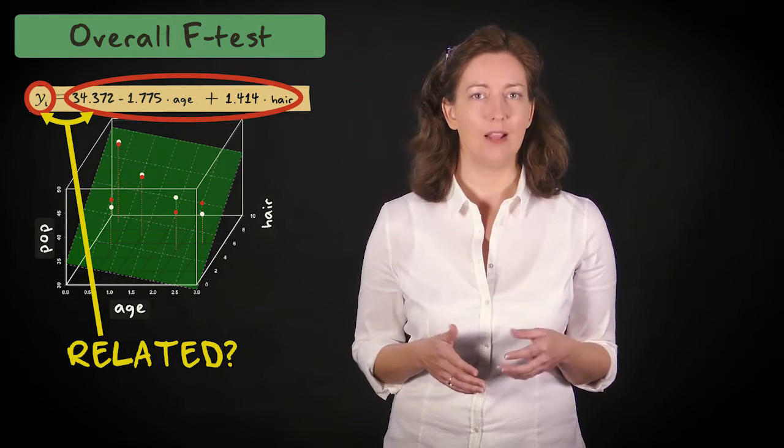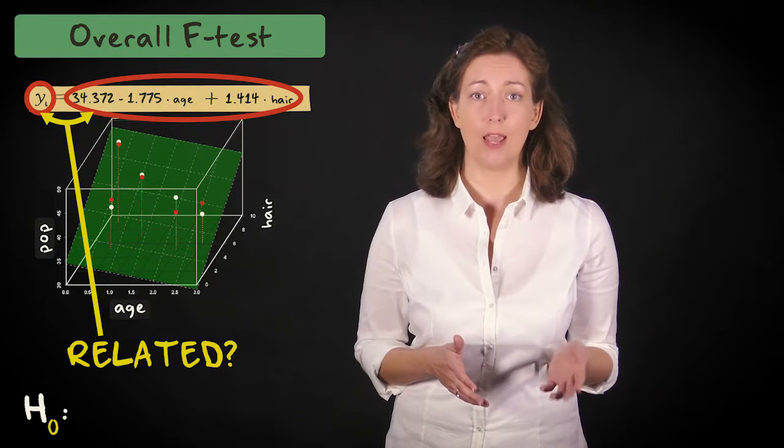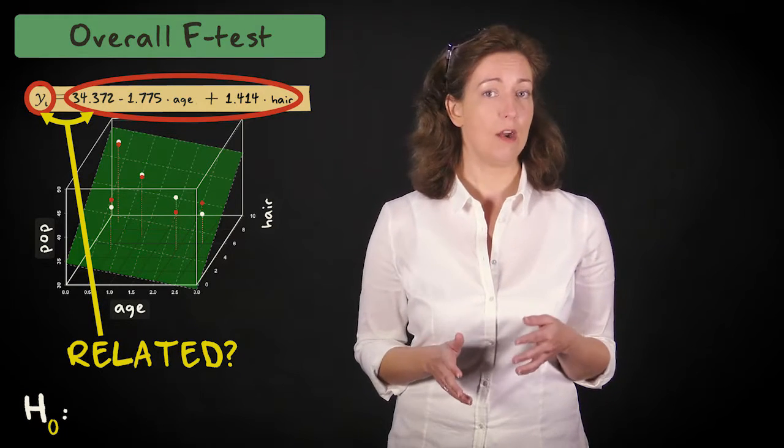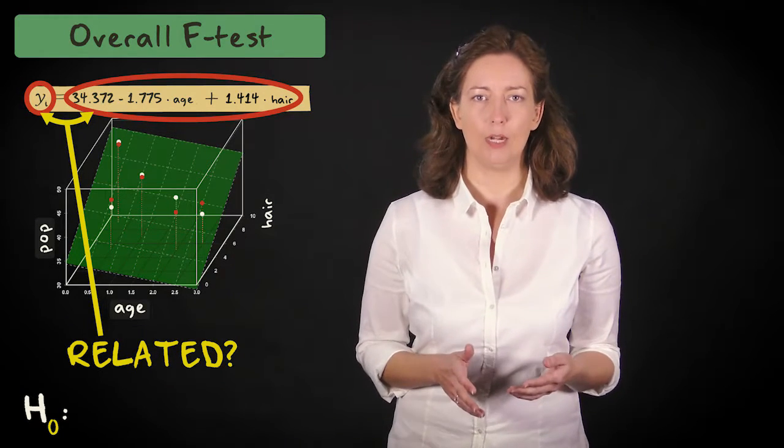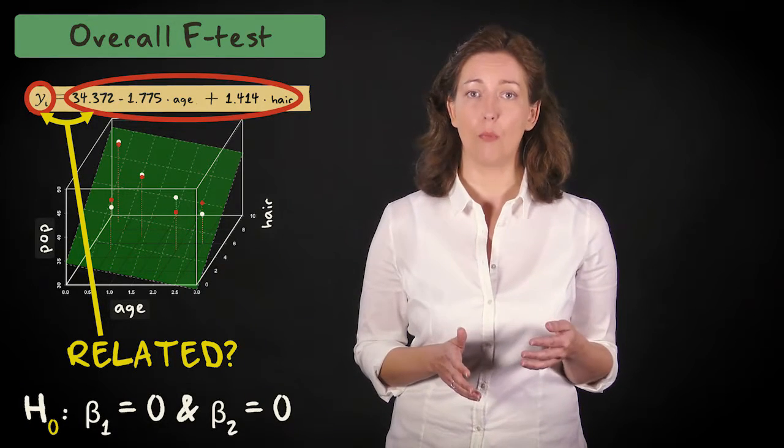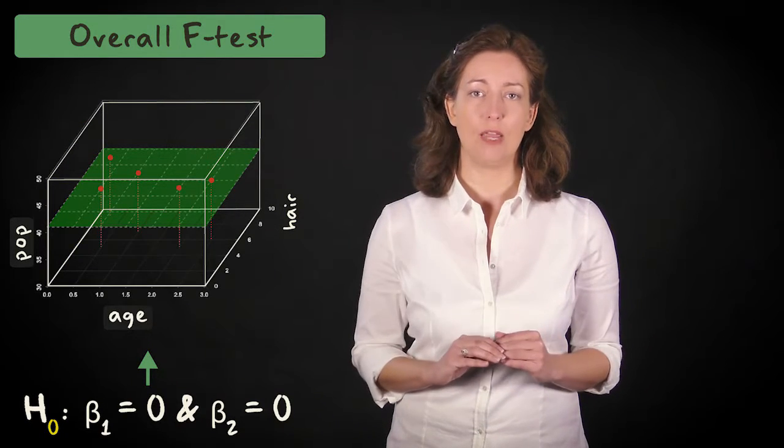As always, we start by specifying the null hypothesis. If there's no relation between the predictors and the response variable, this means that neither cat age nor hairiness helps to predict popularity. In other words, the regression coefficients for both these predictors will be zero. We can visualize this as a flat plane in a three-dimensional graph.